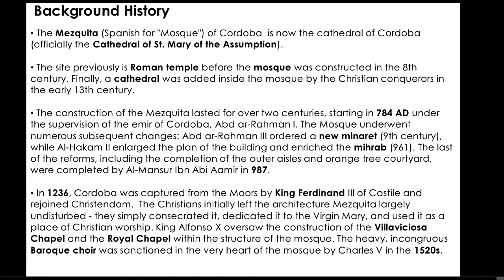Background history: the Mezquita, Spanish for Mosque of Cordoba, is now the Cathedral of Cordoba, officially the Cathedral of Saint Mary of the Assumption. The site was previously a Roman temple before the mosque was constructed in the 8th century. A cathedral was added inside the mosque by Christian conquerors in the early 13th century. Construction of the Mezquita lasted over two centuries, starting in 784 AD under Emir Abd al-Rahman of Cordoba. The mosque underwent numerous subsequent changes.